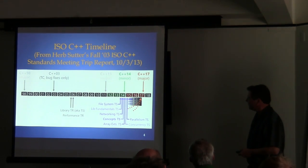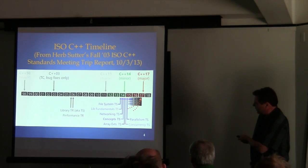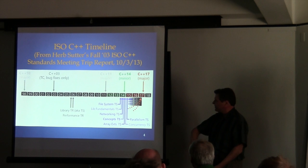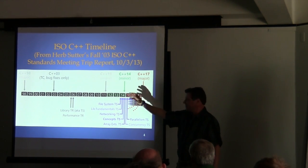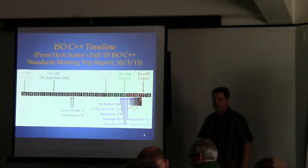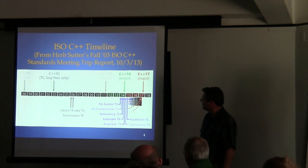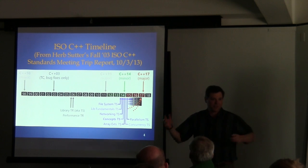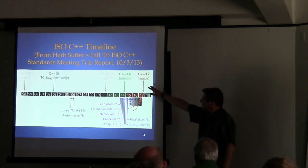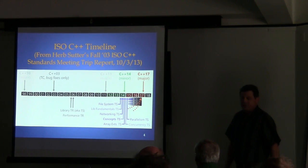In C++11, all the TR1 facilities were recoded using the new language features, making them more efficient with more functionality. Now we're in a period where the standards committee uses technical specifications for features — not necessarily tied to a particular major release — allowing working groups to polish library and language facilities before they make it into an official release. C++14 has been pretty much fixed. The next major update will be C++17.